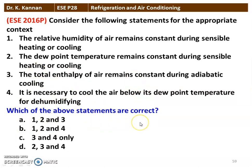Which of the above statements are correct? Statements 2, 3, and 4 are correct. The dew point temperature remains constant during sensible heating or cooling. The total enthalpy of air remains constant during adiabatic cooling. For the dehumidification process, we have to cool the air below the dew point temperature. Therefore, statements 2, 3, and 4 are correct.